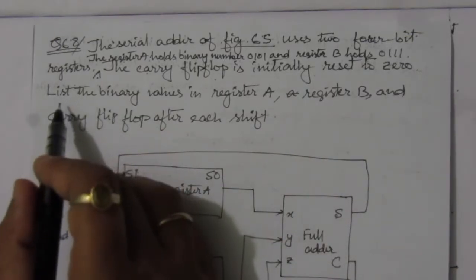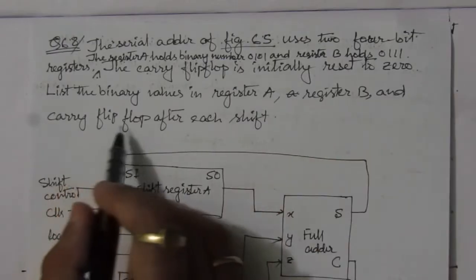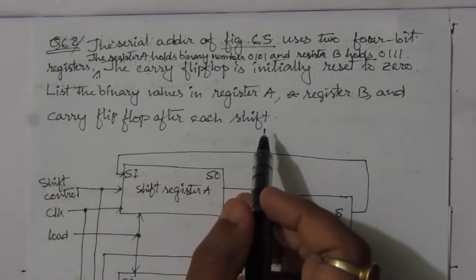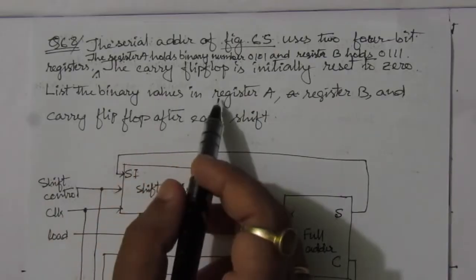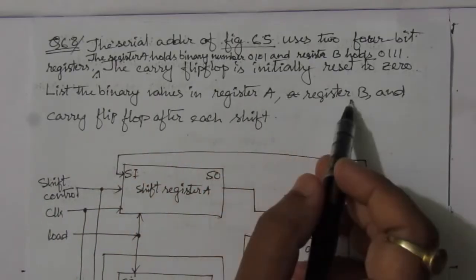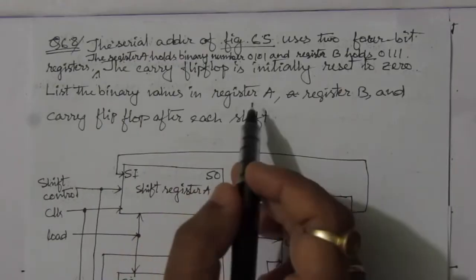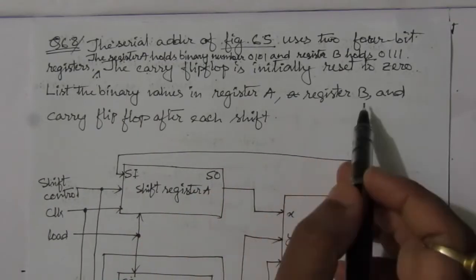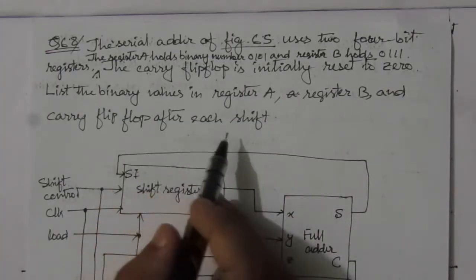We have to find and list the binary values of register A, register B, and the carry flip-flop after each shift. After each clock pulse there will be a shift at the register outputs, so we need the content of register A, register B, and carry after each shift.